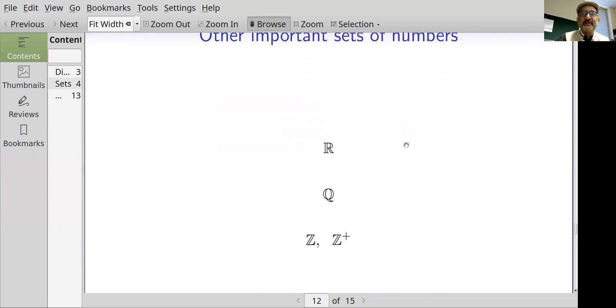Some other important sets of numbers that we are going to see in this course written this way: R means the real numbers. Q means the rational numbers, all numbers which can be written as fractions with integers in the numerator and the denominator. Z stands for the integers, and if I write Z plus that means the positive integers.